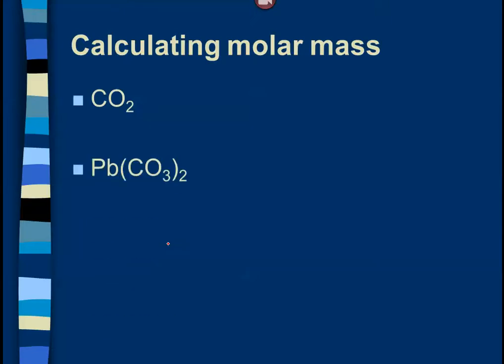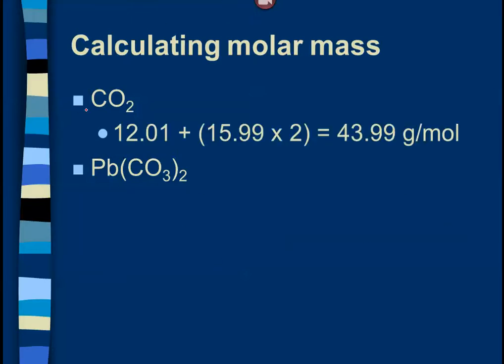Here are two problems I'd like you to try — go ahead and pause the video for a moment and add these up to see what you get. Welcome back. Hopefully you actually did that — you're only cheating yourself. For CO₂: one carbon plus two oxygens, so you multiply oxygen's mass by two. We get about 43.99 grams per mole.